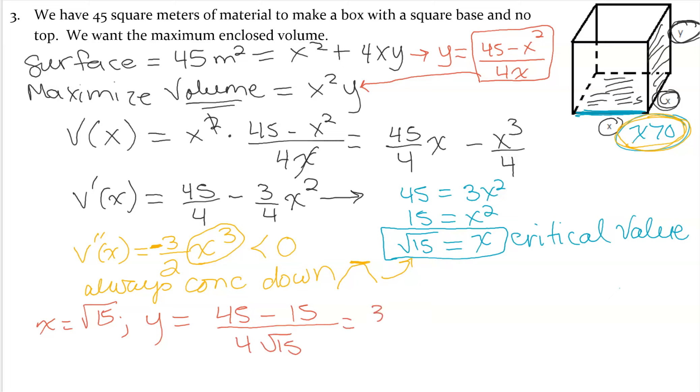That would be 30 over 4 square root 15, that is 15 over 2. Rationalize, you will have 15 square root of 15 over 30. 15 cancels, so you will have square root of 15 over 2. So x would be square root of 15 and y would be square root of 15 over 2. In this case, y would be half the size of x in order for this box to have the maximum volume.